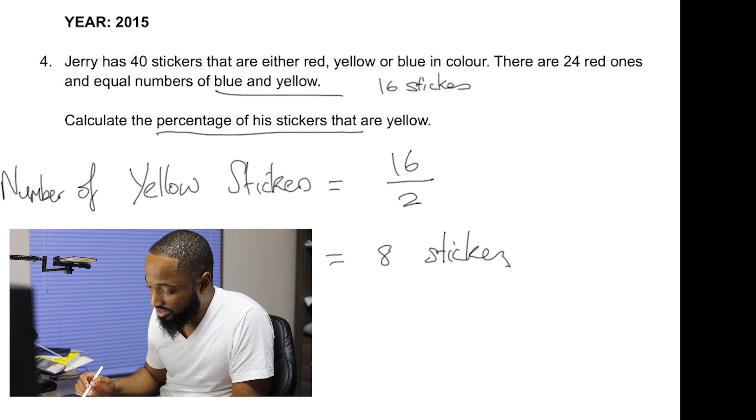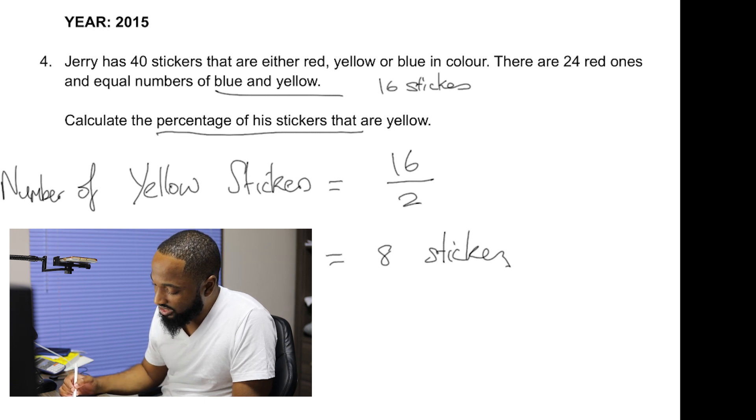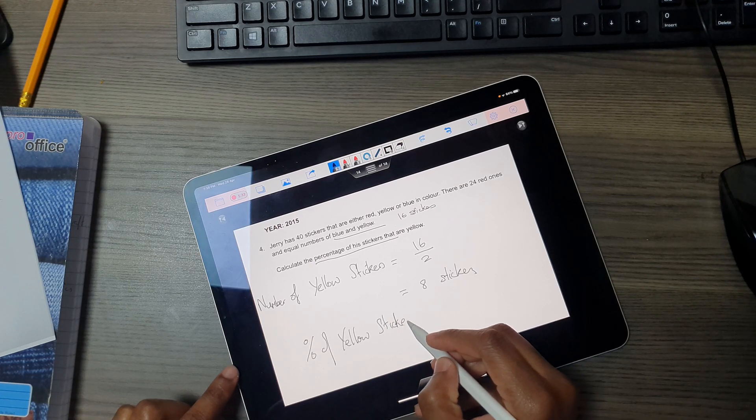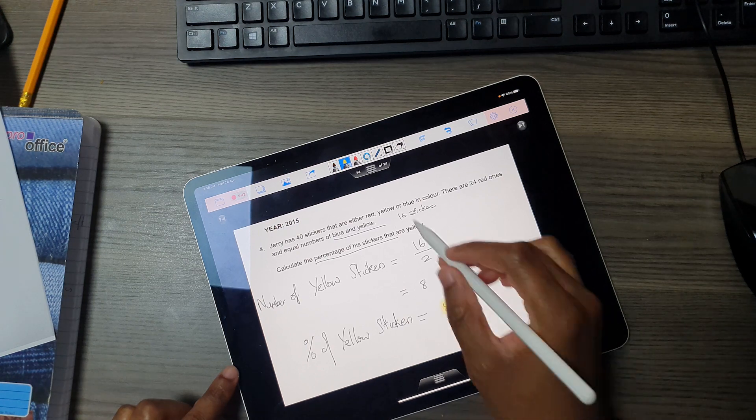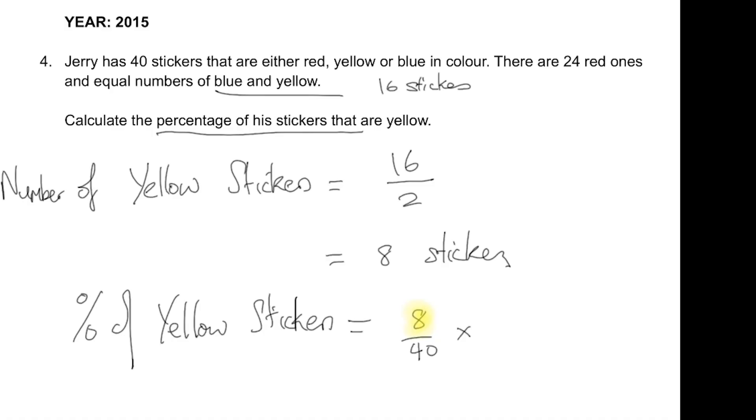The percentage of stickers that are yellow would be out of the total number of stickers we have. We have 8 yellow stickers out of 40 stickers.